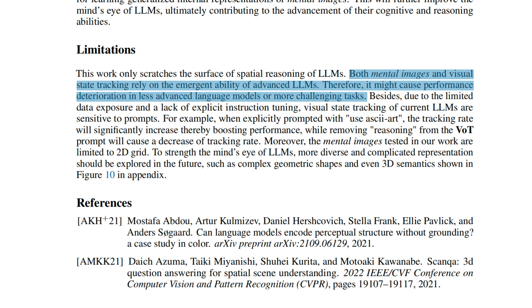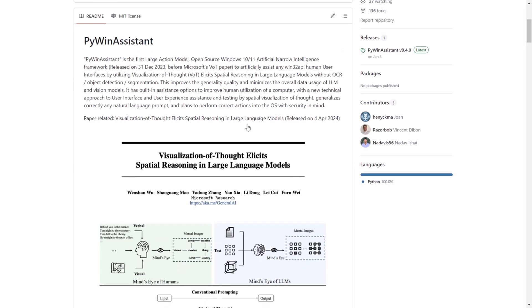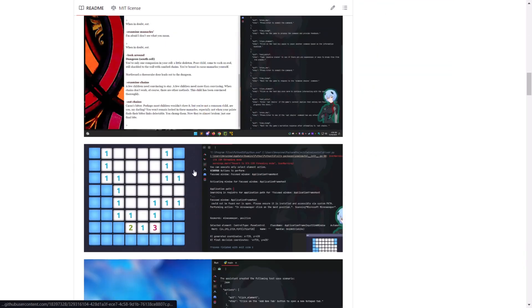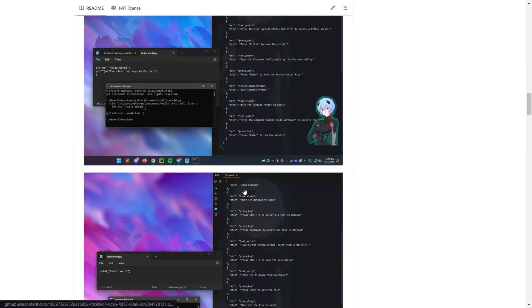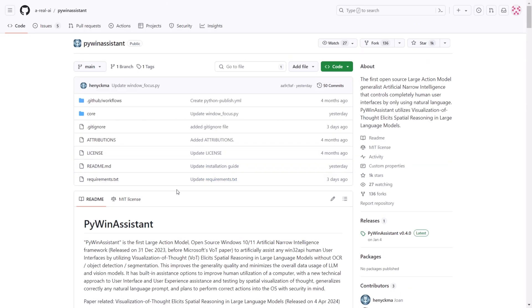Before I present the examples, let's discuss the limitations. Both mental images and visual state tracking rely on the emerging ability of advanced LLMs, therefore it might cause performance deterioration in less advanced language models or more challenging tasks. So there are many impressive implementations of this technology, so I recommend checking them out and reading the research paper if you're interested. If you'd like to see a full tutorial on PyWinAssistant, let me know in the comments. If you enjoyed this video, please give it a like and subscribe. I'll see you in the next one.